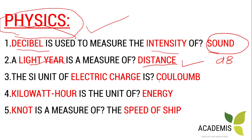The SI unit of electric charge is the Coulomb. Electric charge in the SI unit is Coulomb. This is an important unit to remember — Coulomb — as it relates to core SI units in electricity.